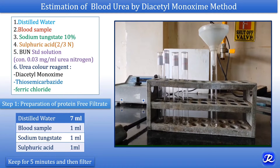Sulfuric acid in the protein-free filtrate converts sodium tungstate into tungstic acid, and tungstic acid is an alkaloidal reagent that causes precipitation of proteins. The filtrate formed is now protein-free. This is done to prevent interference by nitrogen-containing proteins while estimating urea by the diacetylmonoxime method.